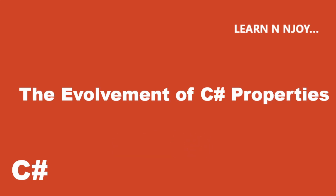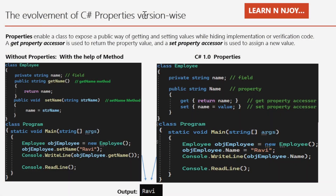Let's get started with the evolution of C# properties. Before we go deep into understanding the evolution of C# properties, let's first understand what properties are. Properties enable a class to expose a public way of getting and setting values while hiding implementation or verification. There are two property accessors: the get property accessor, used to return the property value, and the set property accessor, used to assign a new value.